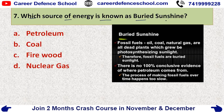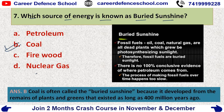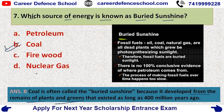Which source of energy is known as buried sunshine? The options are petroleum, coal, firewood, or nuclear gas. The correct answer is option B — coal is the source of energy known as buried sunshine. It is often called buried sunshine because it develops from the remains of plants and trees that existed as long as 400 million years ago.